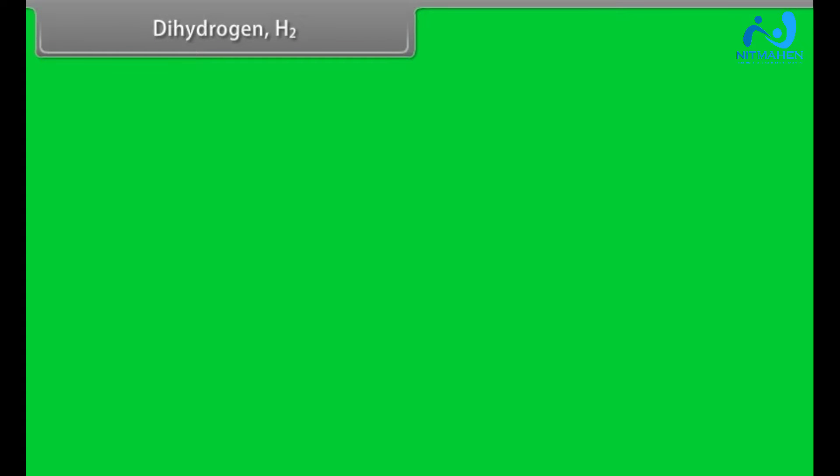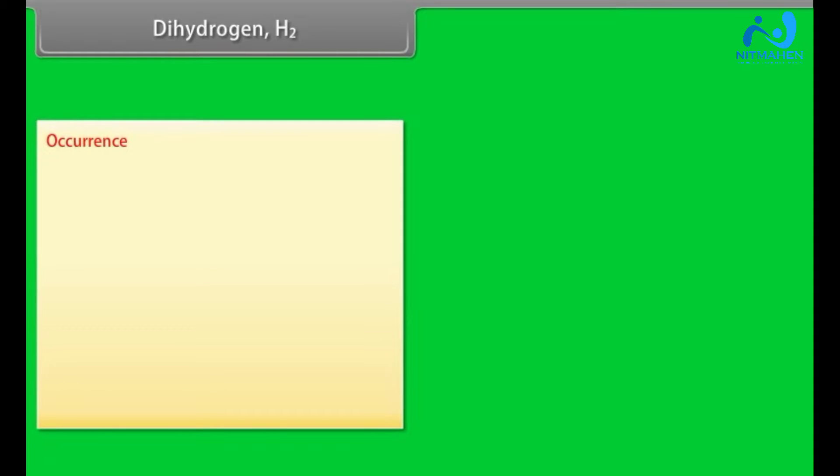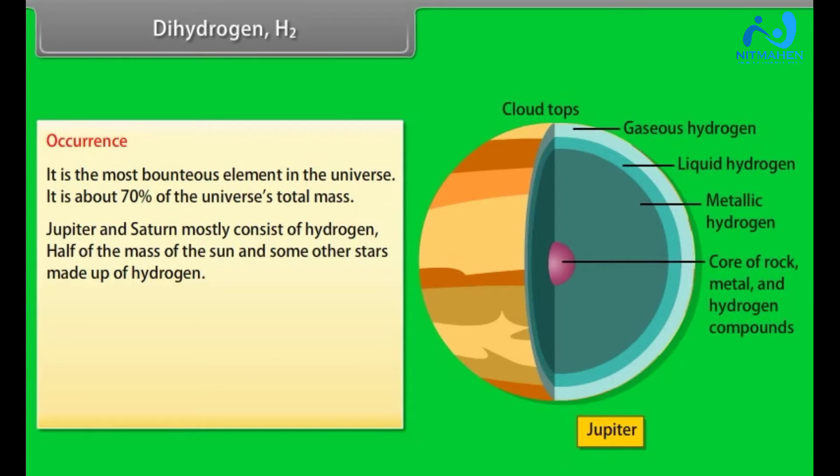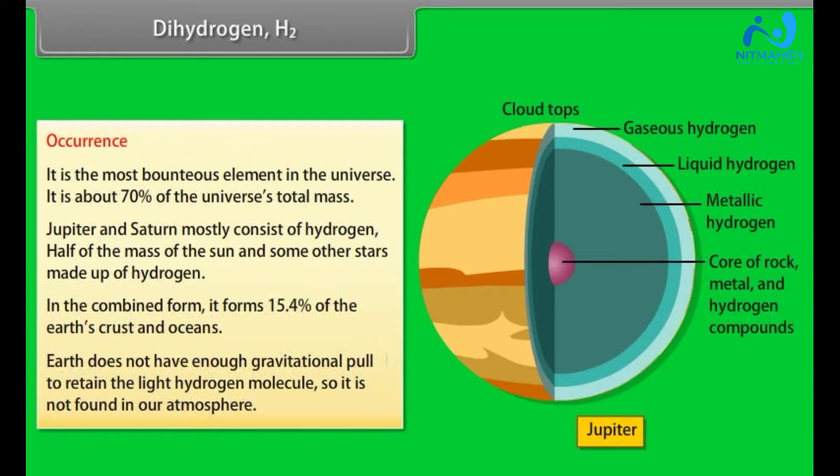Dihydrogen. Dihydrogen is the most bounteous element in the universe. It has about 70% of the universe's total mass. Jupiter and Saturn mostly consist of hydrogen. Half of the mass of the Sun and some other stars made up of hydrogen. In the combined form, it forms 15.4% of the Earth's crust and oceans. Earth does not have enough gravitational pull to retain the light hydrogen molecule, so it is not found in our atmosphere.